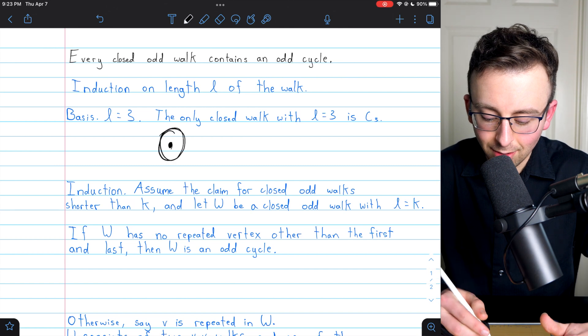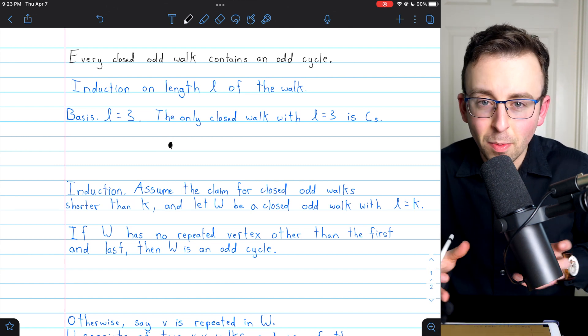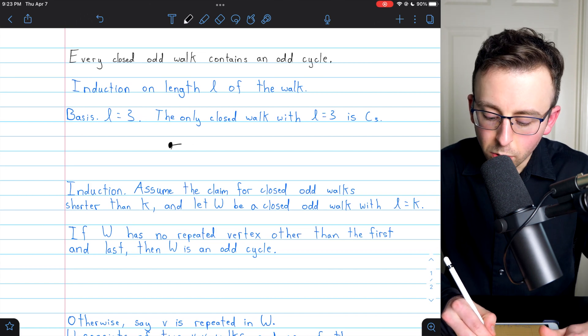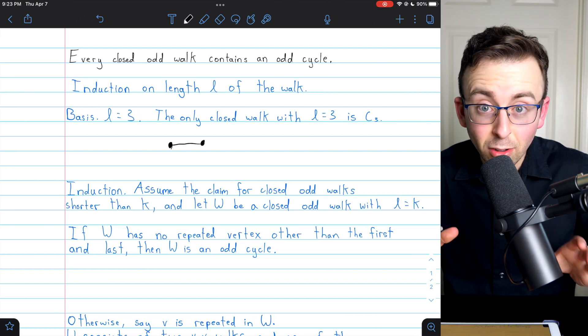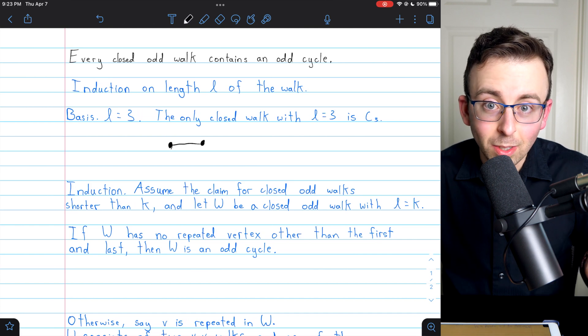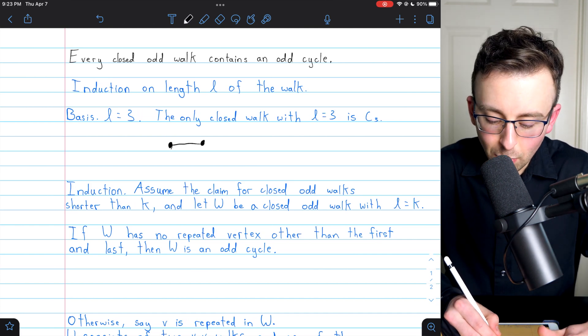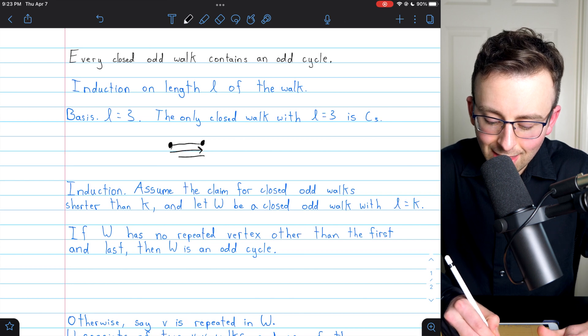For example, if we have just a single vertex here, let's just imagine we're creating a closed even walk. We could go to some other vertex, and this is a walk, so we're allowed to go wherever we want. We can traverse edges multiple times.